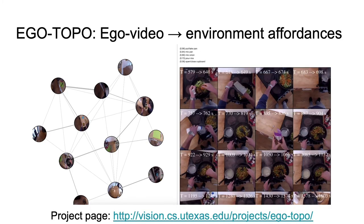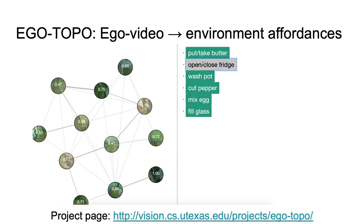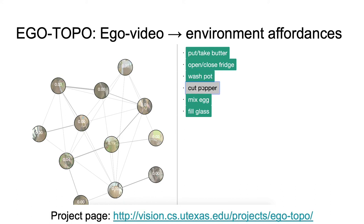Here we show a graph for an egocentric video and results of our affordance model applied to each node in the graph. In conclusion, egocentric video is much more than just a stack of frames. Treating frames of the video as visits to nodes in a topological graph puts the agent and the environment's relationship at the forefront and allows us to effectively reason about the two.